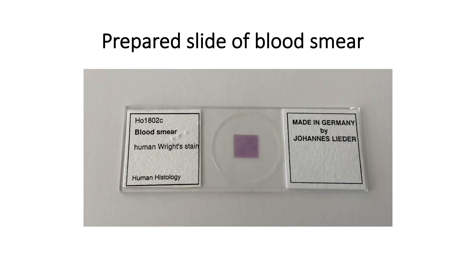Let's look at the prepared slide of human blood smear. This blood smear is also referred to as a peripheral smear, and it is an important test for evaluating blood-related problems. Commonly used stains are Leishman stain and Wright-Giemsa stain. This slide uses the Wright stain, which is a type of Romanowsky stain commonly used in hematology laboratories for routine staining of peripheral blood smears.